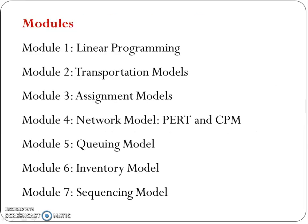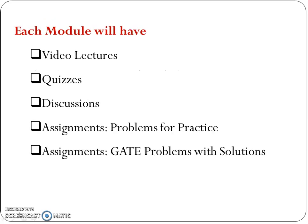I divide the syllabus into seven modules. Module 1: Linear Programming. Module 2: Transportation Model. Module 3: Assignment Model. Module 4: Network Model, which includes Program Evaluation Review Technique (PERT) and Critical Path Method (CPM). Module 5: Queuing Model. Module 6: Inventory Model. Module 7: Sequencing Model. Every module will have video lectures, quizzes, discussions, and assignments — that is, problems for practice and assignments using GATE problems with solutions.